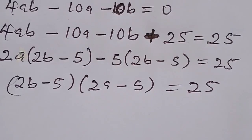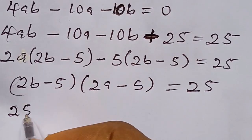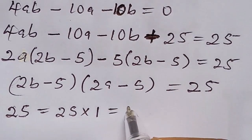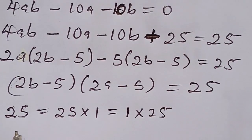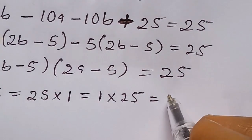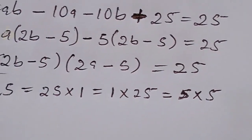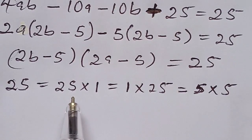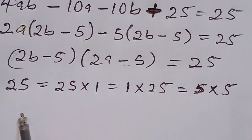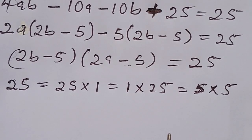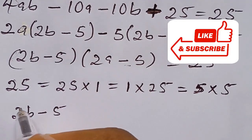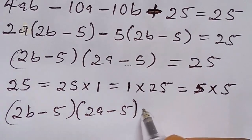Now from here we consider the right hand side. It implies that 25 can be given as 25 multiplied by 1, likewise 1 multiplied by 25, and we can also have 5 multiplied by 5. For each of these factor pairs of 25, we are going to equate them with the left hand side and treat them one by one to find the values of a and b as case 1, case 2, and case 3.